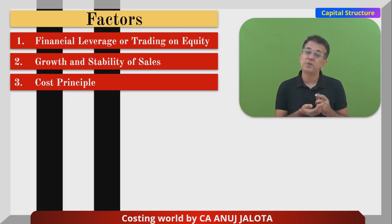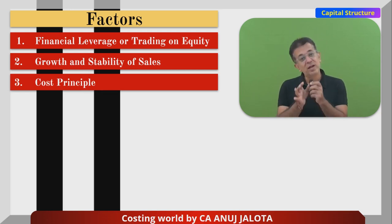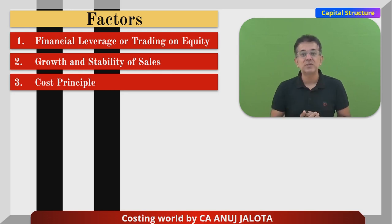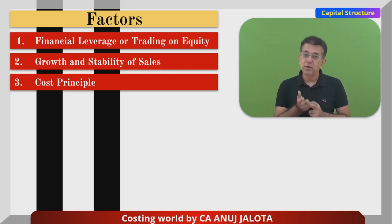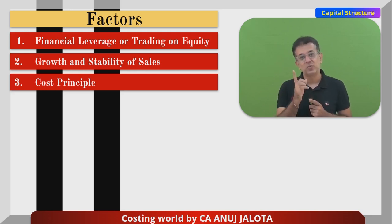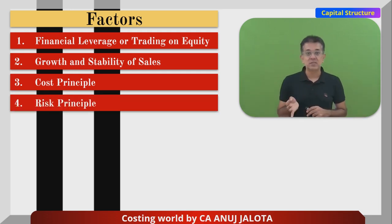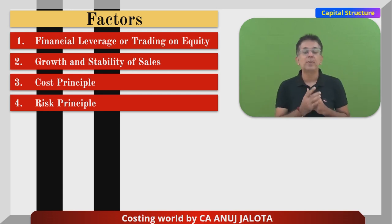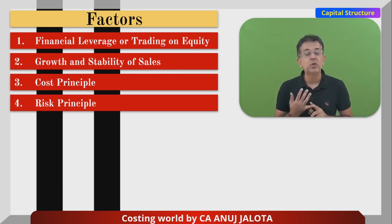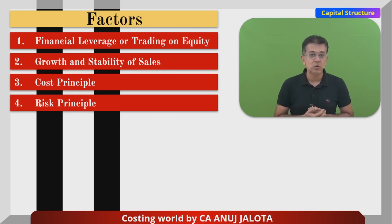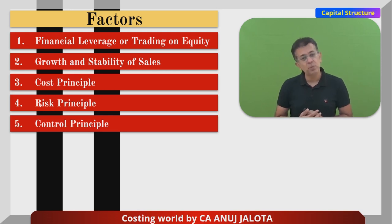Point three: the cost principle. Debt is cheaper than equity, but it has higher risk, so you have to manage that balance — that's a principle we always consider before raising money, because we don't want our cost to be very high. For the risk principle: debt always carries the highest risk, followed by preference shares, followed by equity. Debt has the highest risk because whether you have profits or not, you must pay interest every year, and you also have to redeem the capital when the debt period ends.